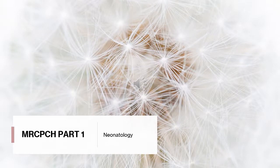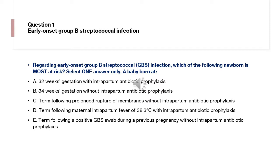Hello everyone, this is MRC BCH Part 1 immunology revision. Question number 1 is regarding early onset sepsis, and the most common cause is GBS infection. Which one of the following is at most risk? Select one.